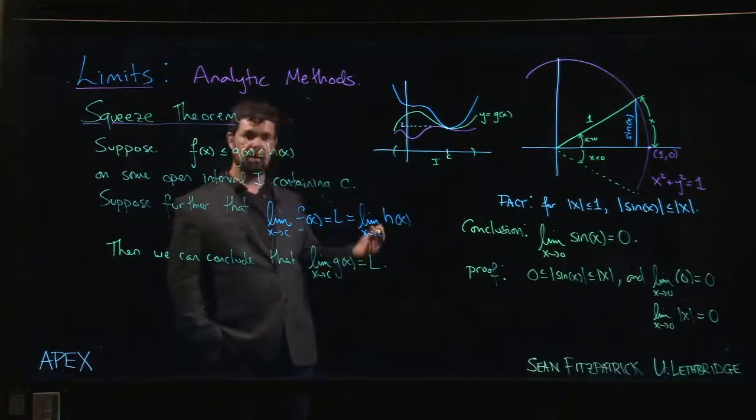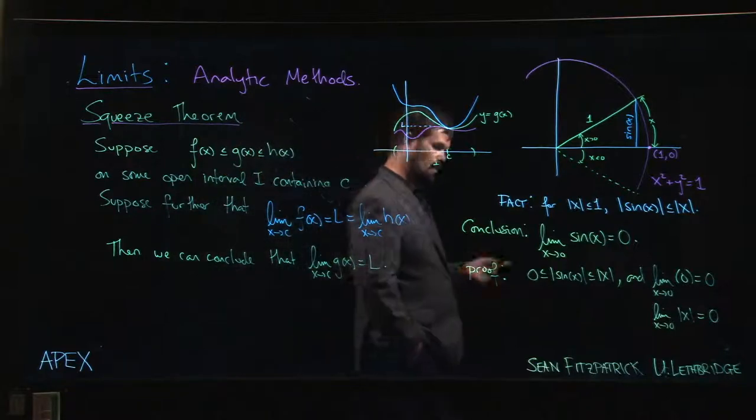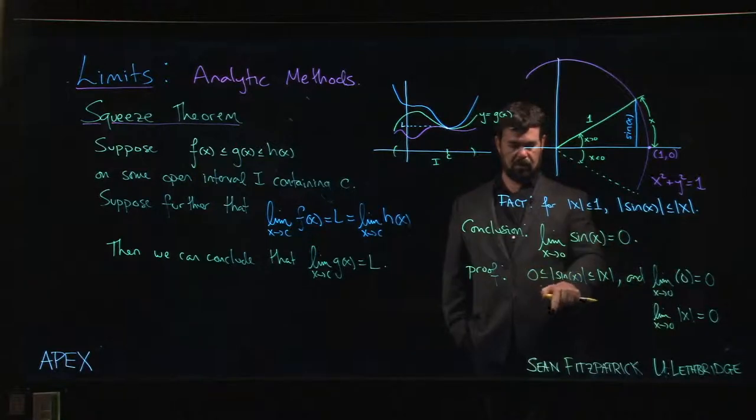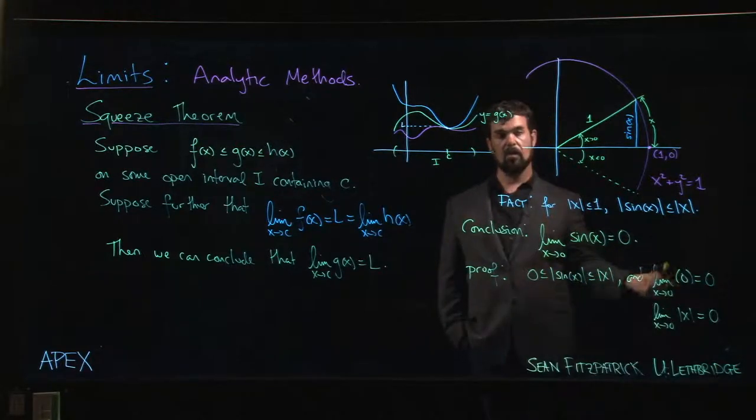If this feels a little bit awkward, you could always resort to an epsilon delta proof. You could take delta equal to epsilon, and it's going to work, because if the absolute value of x is less than delta, so is the absolute value of sine x. So with delta equal to epsilon, you get your result.